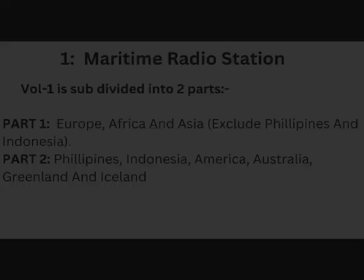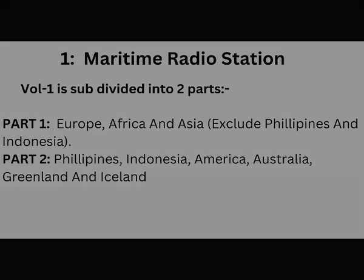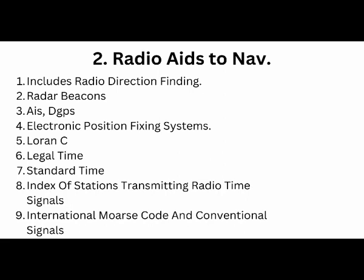Volume 1 is also divided into two different parts. Part 1 covers the areas of Europe, Africa, and Asia, whereas Part 2 covers areas of the Philippines, Indonesia, America, Australia, Greenland, and Iceland.